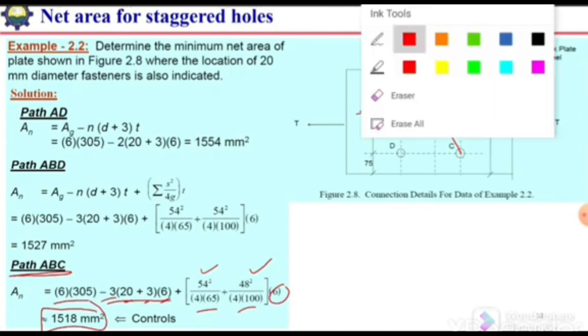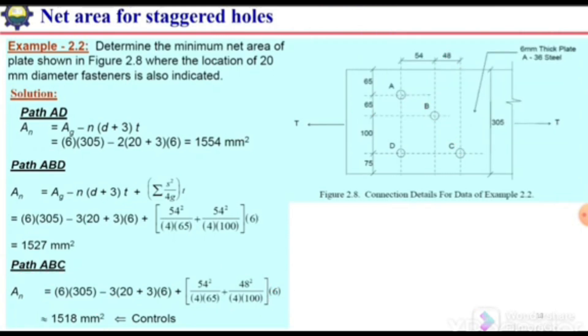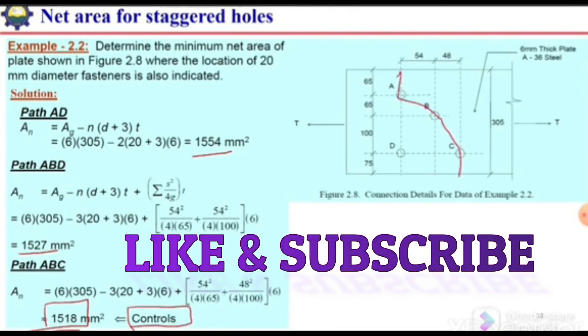Now we need to check which one will be the critical path. If we apply the load, the failure will be along which path? For all these three paths, the path which has the least area will be the governing area or the critical section. We have 1554, 1527, and 1518 mm². So 1518 mm² will be the critical area that will control, and the failure will occur along this path.